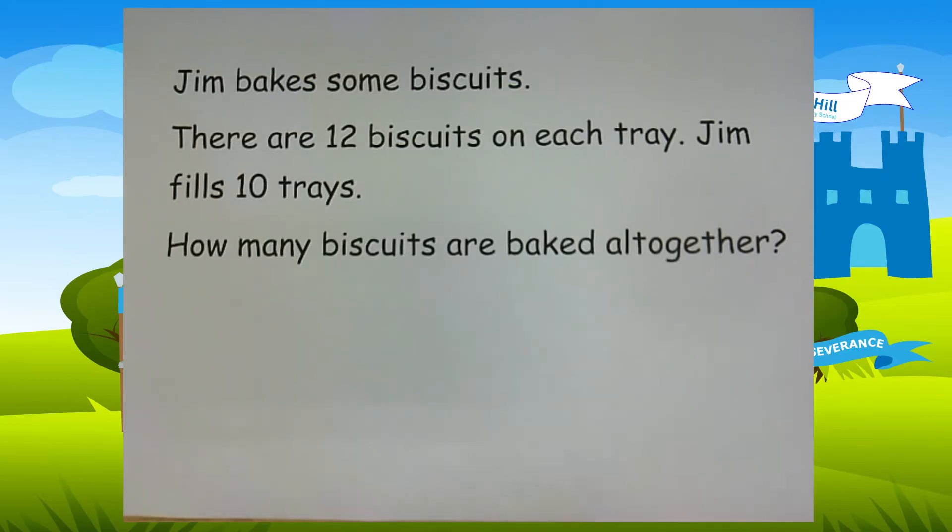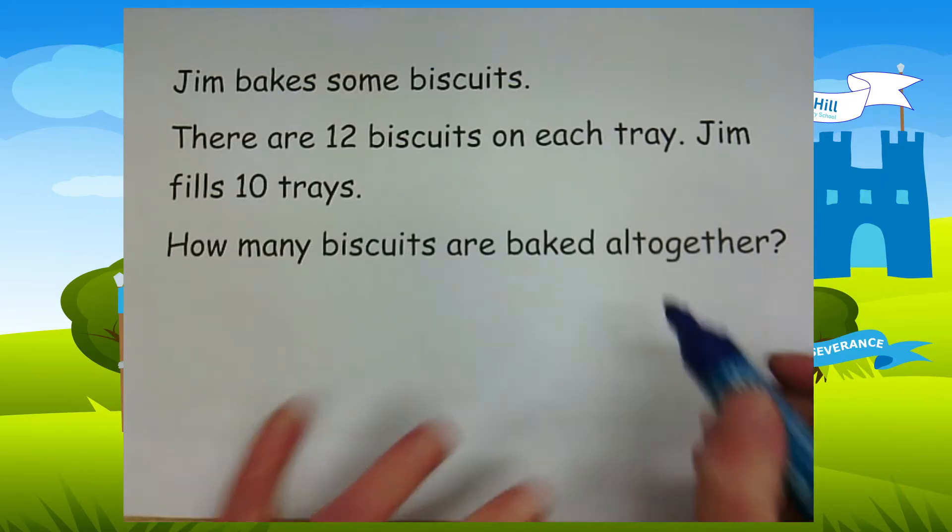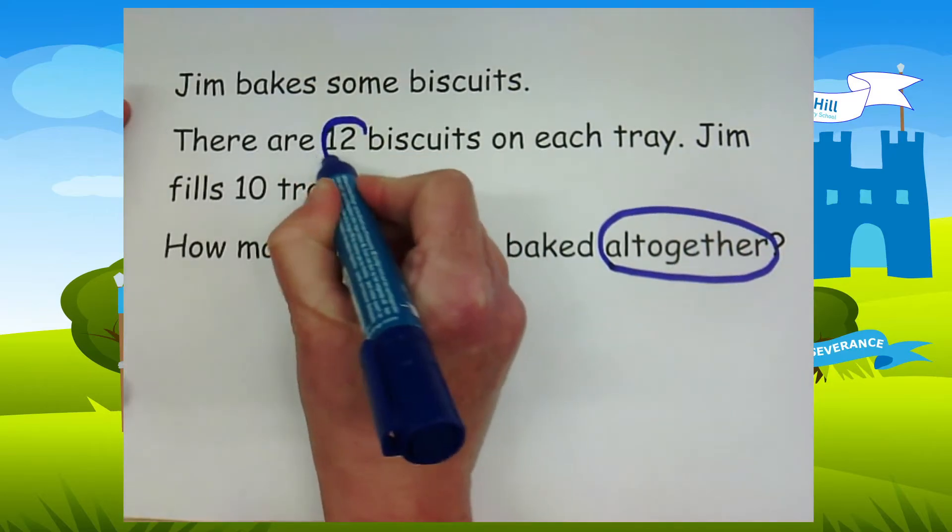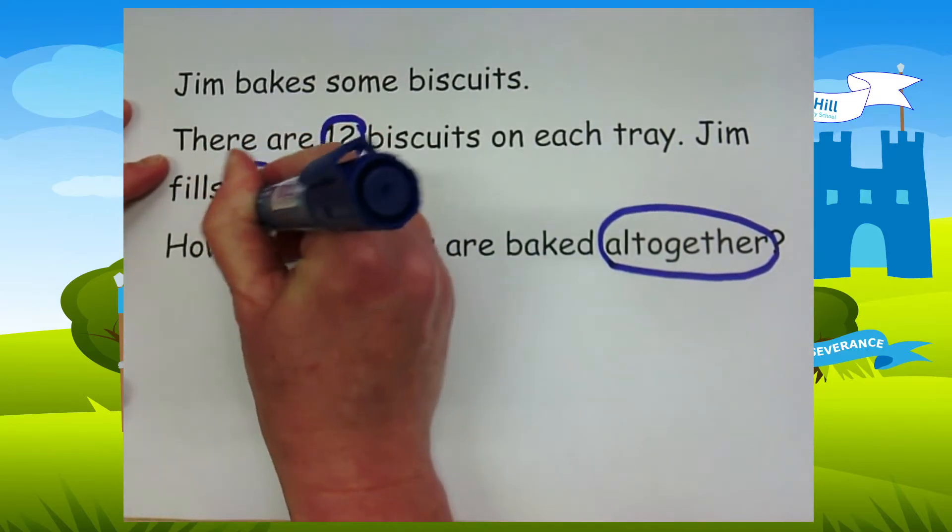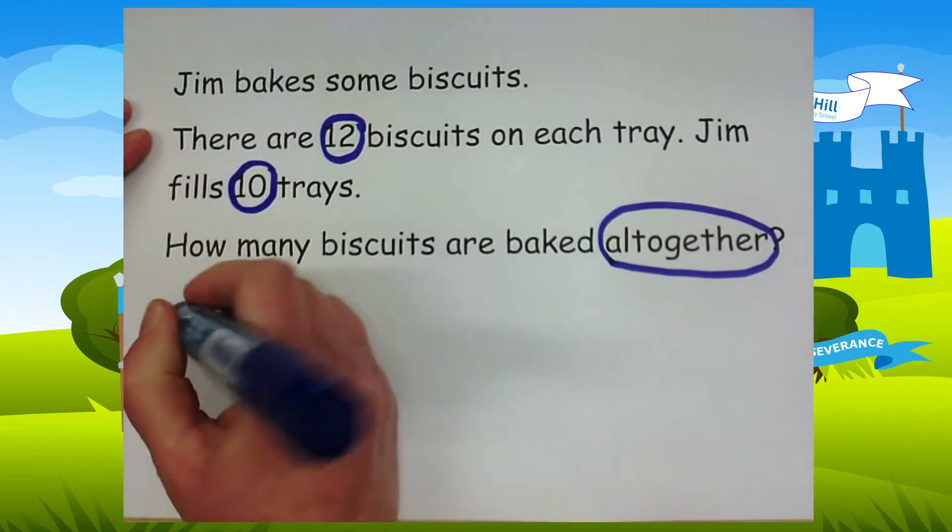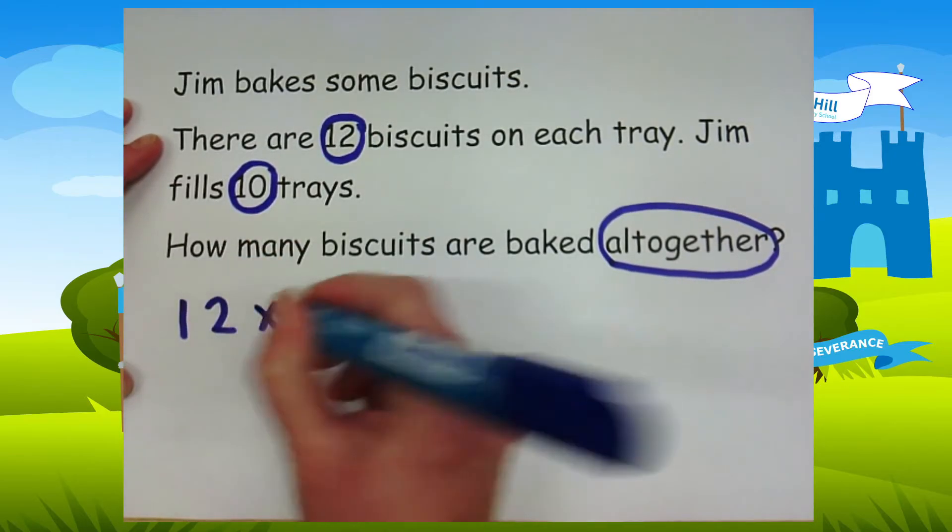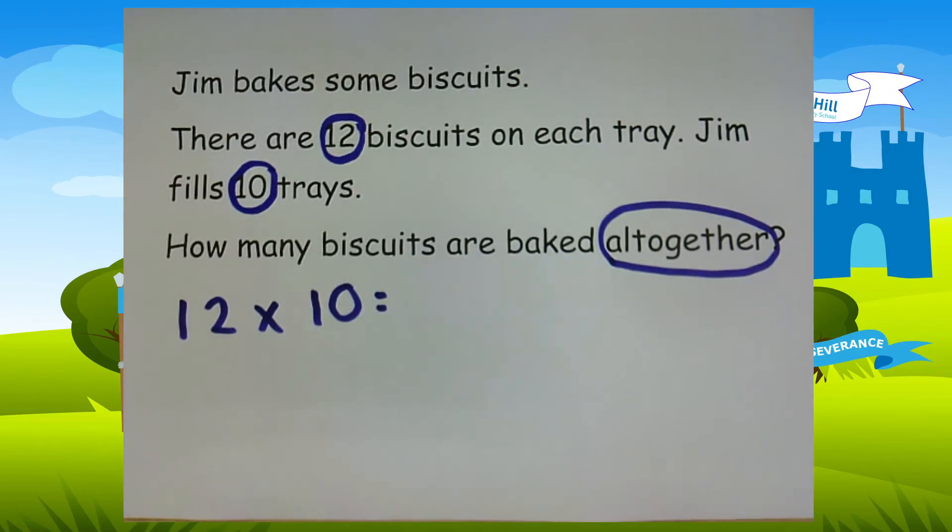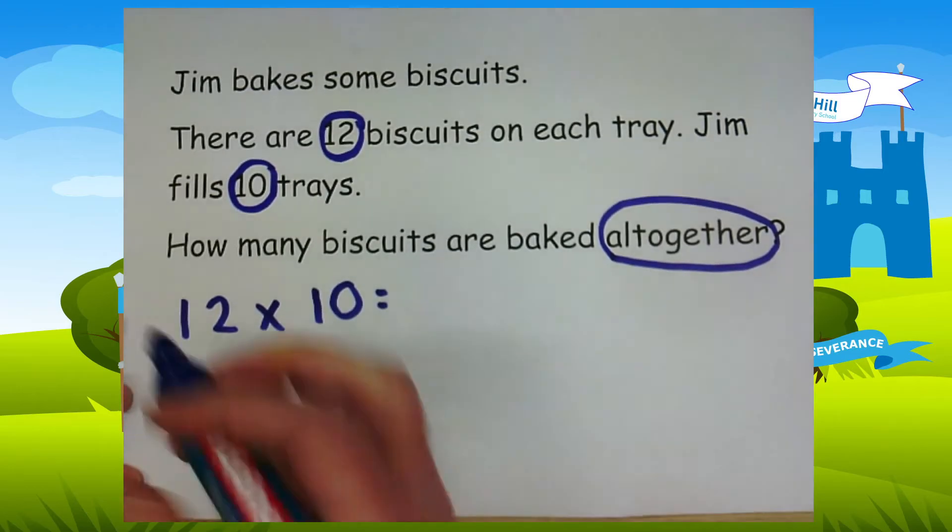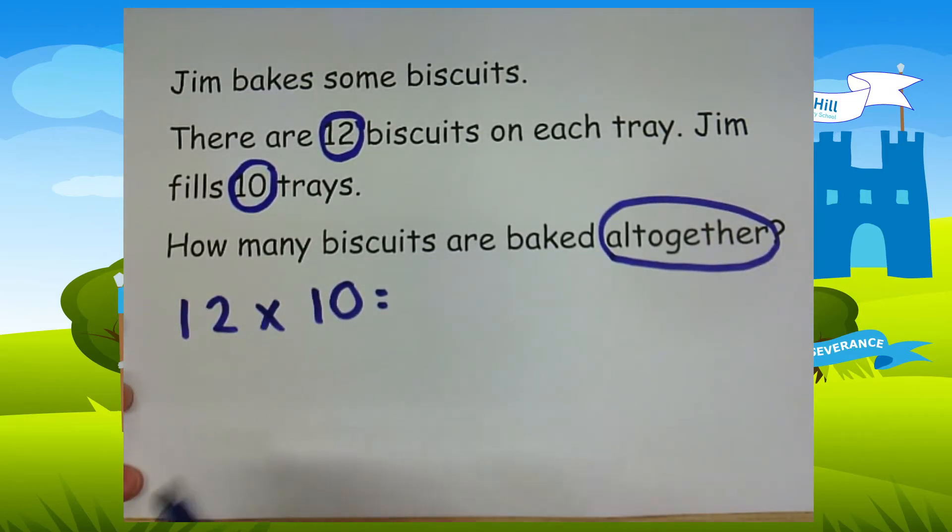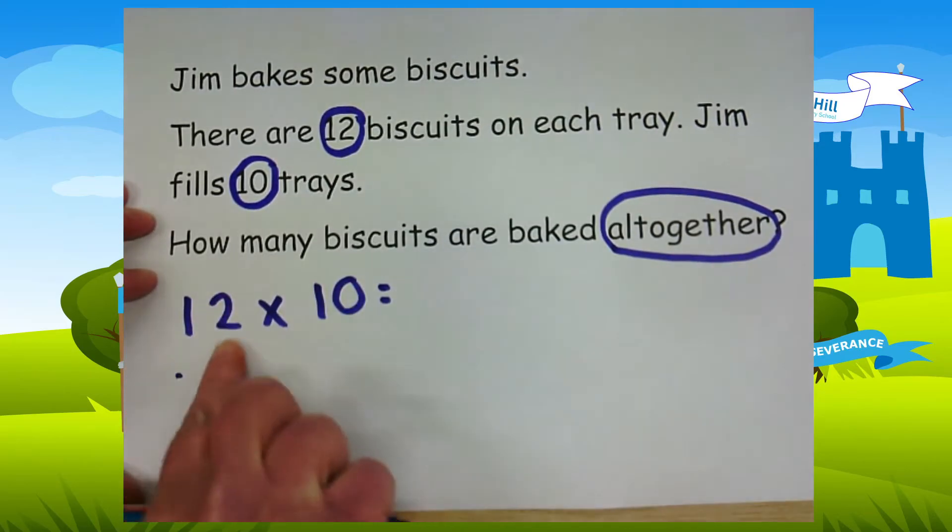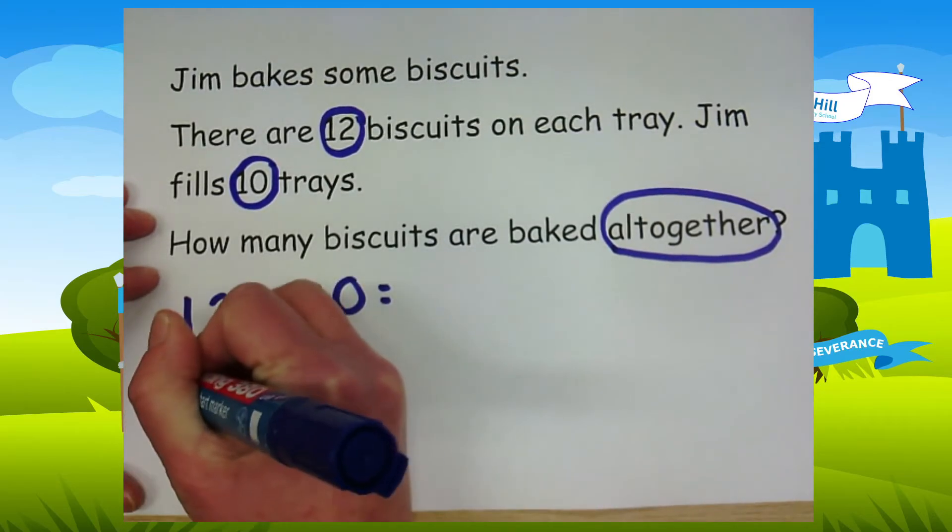Okay, so it's another all together, so it's another multiplication. So we know that we've got twelve biscuits and ten trays. So twelve times ten, twelve lots of ten. I'm not going to use the bar model this time because I can count in tens. But just to help me so I don't get muddled, I'm going to use ten sticks. I haven't got them with me, so I'm going to draw them. So I need twelve lots of ten, so I'm going to draw twelve.